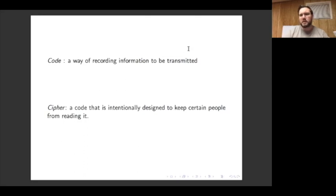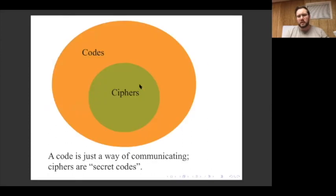Whereas a cipher is a code that is intentionally designed to keep certain people from reading it. This diagram reminds us that every cipher is a type of code, but not vice versa.